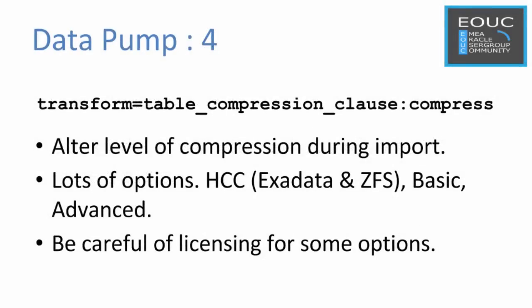The transform parameter can include a table compression clause. This alters the level of compression used during import. There are lots of different options including hyper columnar compression for Exadata and ZFS, and basic and advanced compression. Just be careful which one you pick because there are licensing implications on some of them.